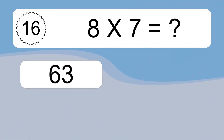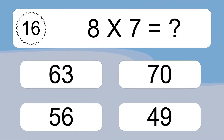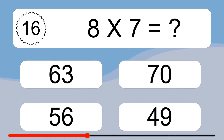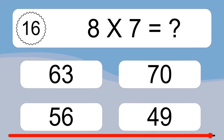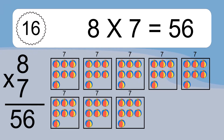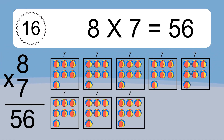8 times 7 equals what? 8 times 7 equals 56. We have 8 boxes, and each box has 7 colorful balls inside. If you count all the balls in all the boxes together, you will have 8 times 7 balls. This equals 56 balls.